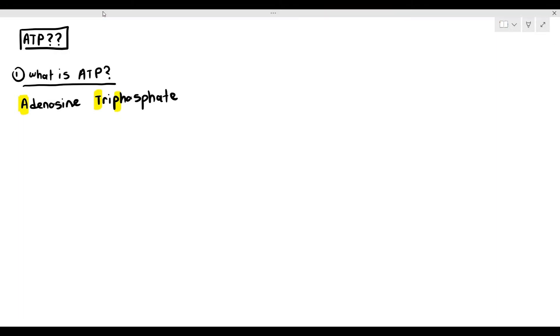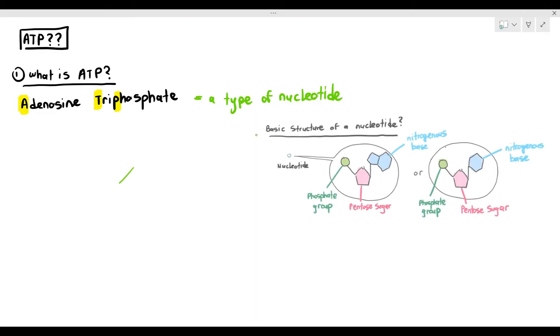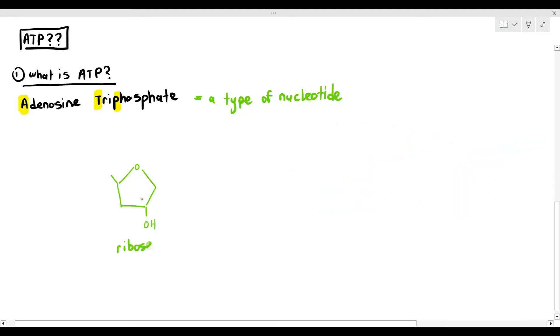Just like any other biological molecule, you must know the structure of ATP. And here's the interesting thing: ATP is actually a type of nucleotide. If you remember nucleotides, they actually have three parts, which are the pentose sugar, the nitrogen base, and the phosphate group.